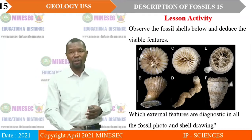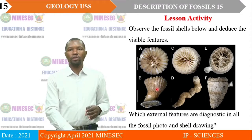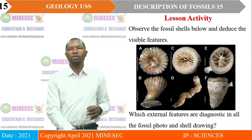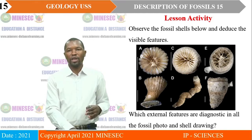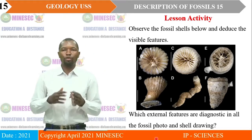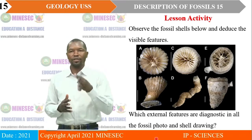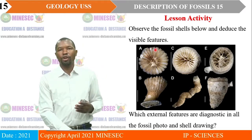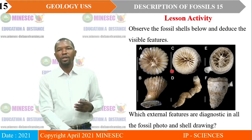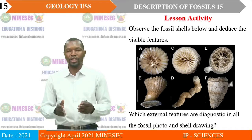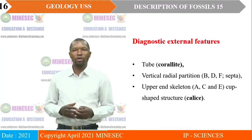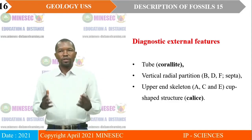In our lesson activity, we shall observe photos of fossil shells and deduce the visible features. Look at fossil A right up to fossil F. While you observe, you should be able to bring out external features that are diagnostic in all the fossil photos, as well as the shell drawings. So, look at A — you will realize some peculiarities. A, C, and E have some peculiarities, and then B, D, and F also have some peculiarities. Practically, those diagnostic features would include the tube — that is, the coralite — for A, C, and E.